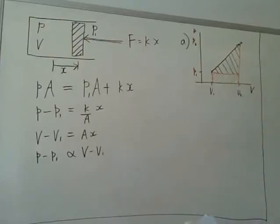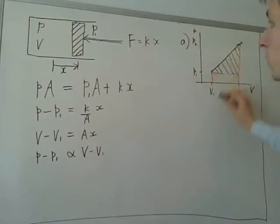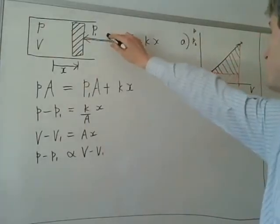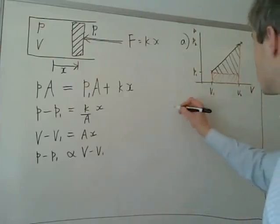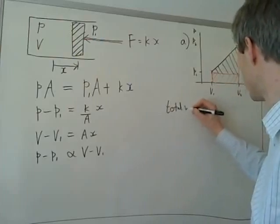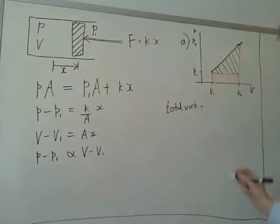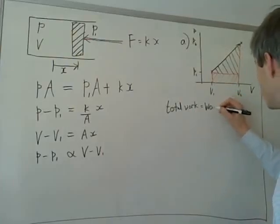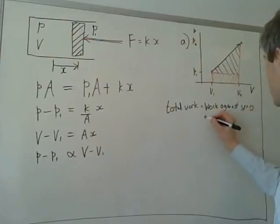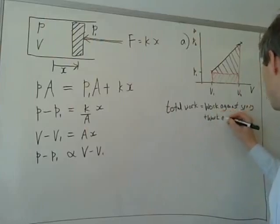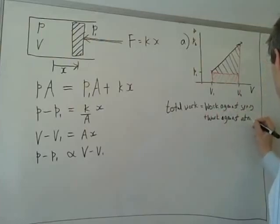But what do these two areas correspond to? Here we're working against a pressure of P1, a constant pressure. So, we could say that this is the work done against atmospheric pressure, or the background pressure, P1. Whereas this pressure, this increasing pressure with displacement, is due to the increasing force on the piston as the spring gets compressed. So, the total work is equal to the work done against the spring, plus the work against the atmosphere.